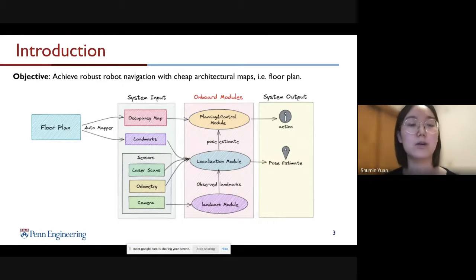The problem objective is to achieve robust robot navigation with a cheap architectural map, which in this case is a floor plan. This is the system overview of this algorithm, the whole system overview.